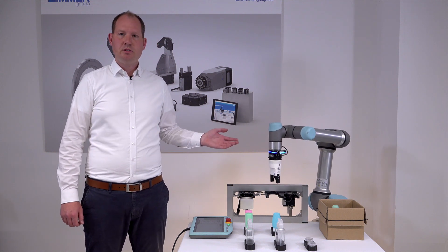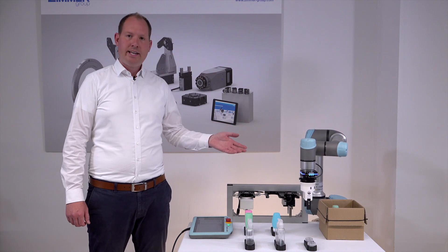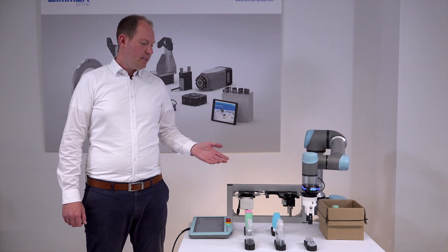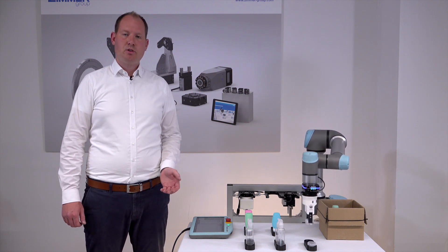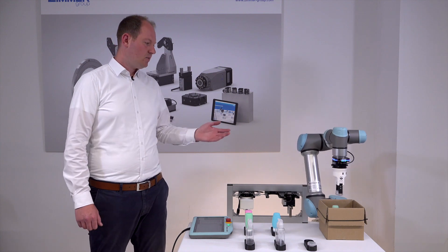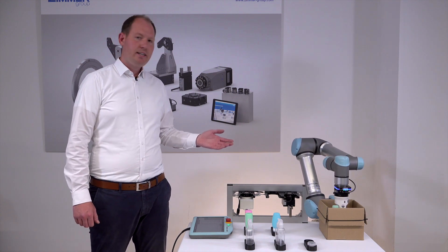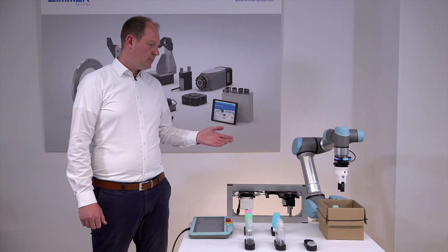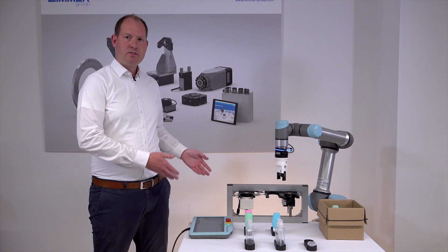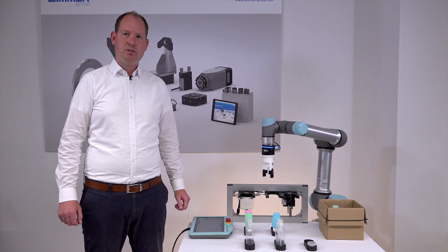With this interface, it is possible to integrate mechanical grippers from Zimmer as well as vacuum grippers from Schmalz. So the question is, how can we make it even easier to integrate new products and program our grippers with our match end-of-arm ecosystem?